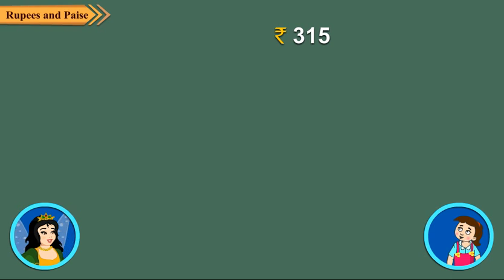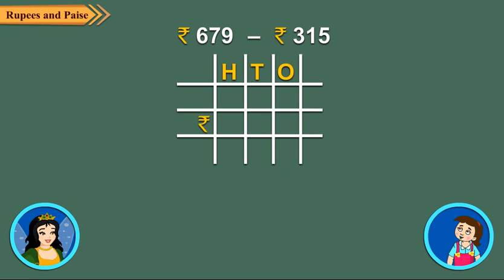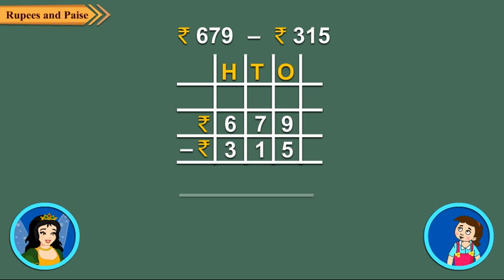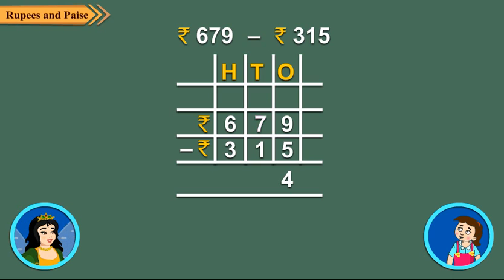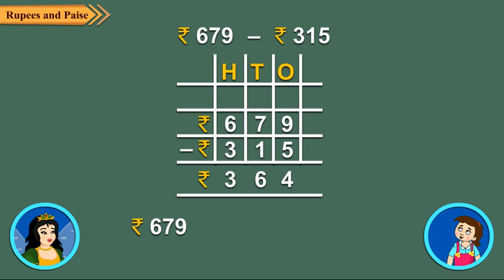Now let us subtract 315 rupees from 679 rupees. First arrange the amounts in columns. Now subtract the ones: 9 ones minus 5 ones is equal to 4 ones. Next, subtract the tens: 7 tens minus 1 ten is equal to 6 tens. Finally, subtract the hundreds: 6 hundreds minus 3 hundreds is equal to 3 hundreds. So 679 rupees minus 315 rupees is equal to 364 rupees.